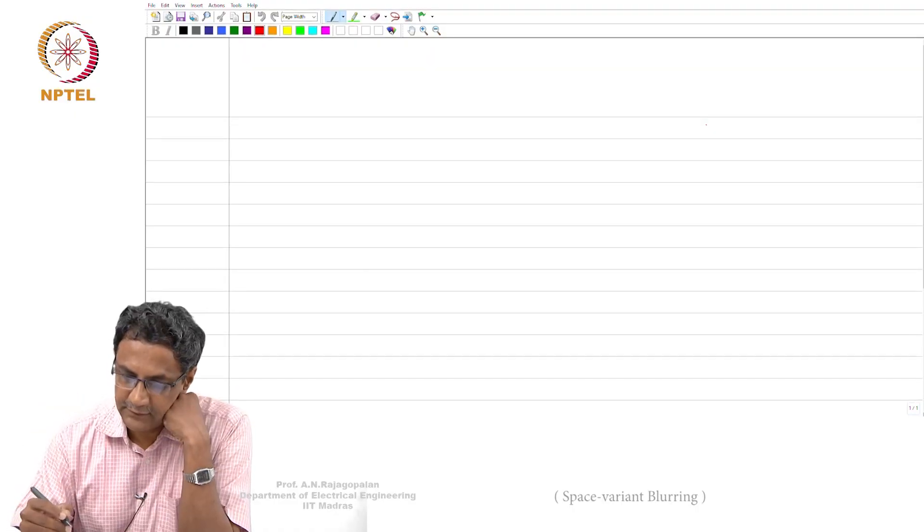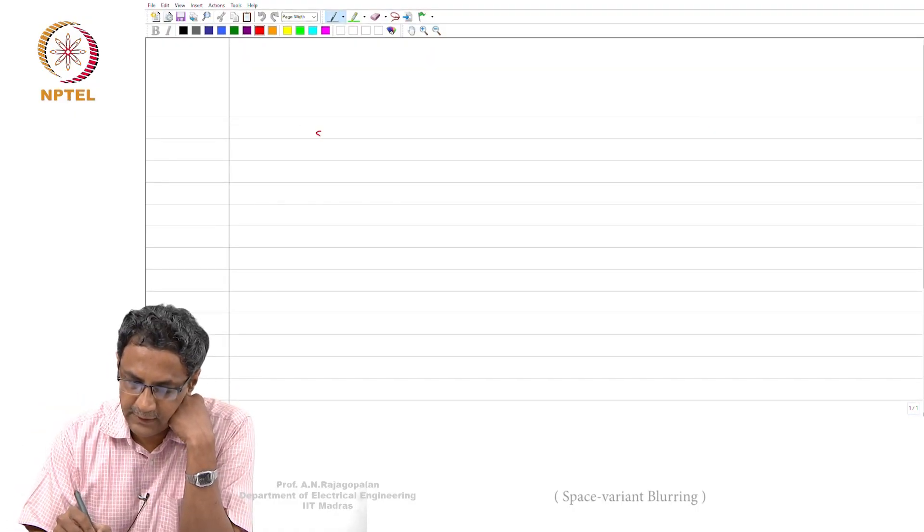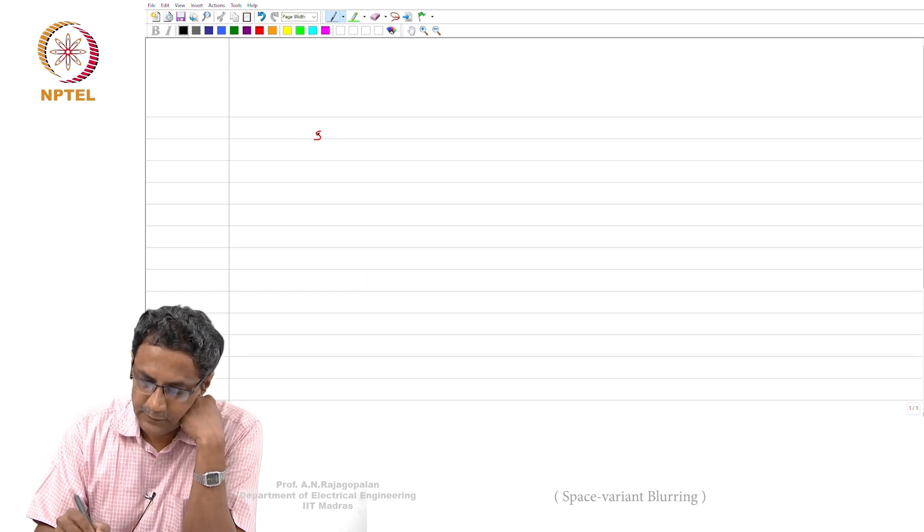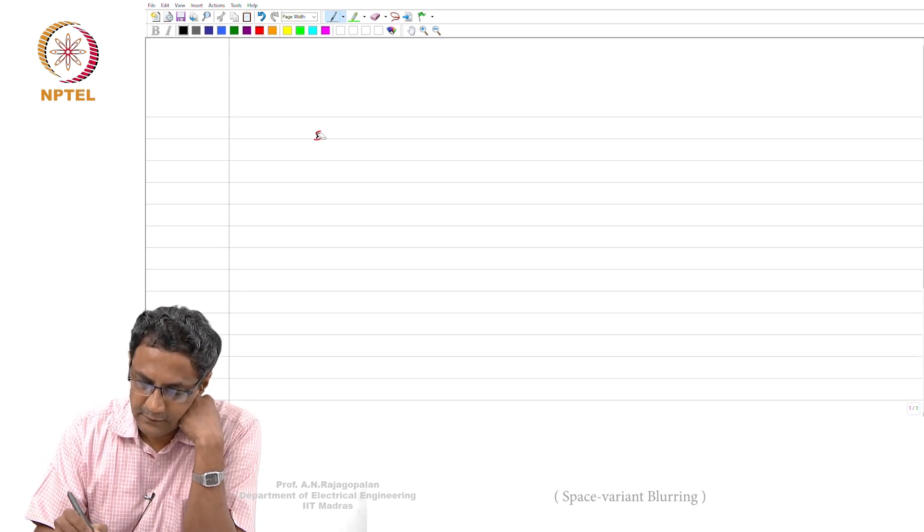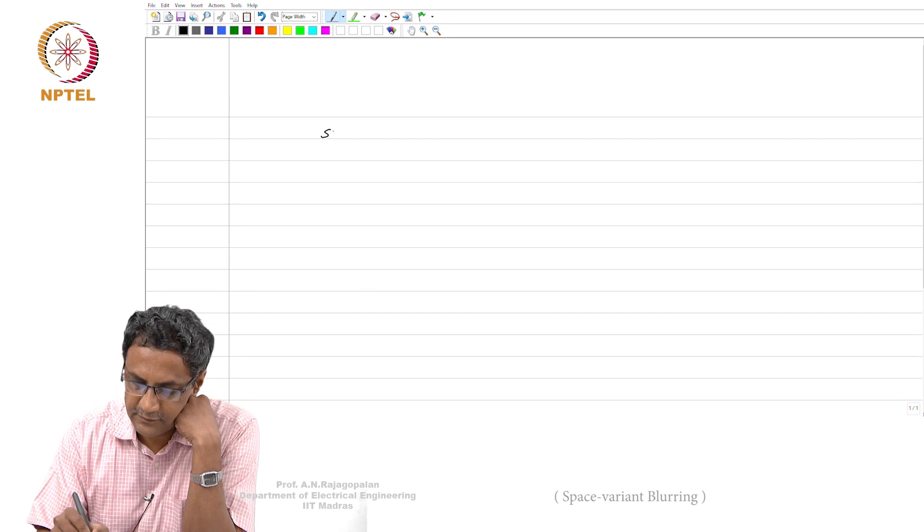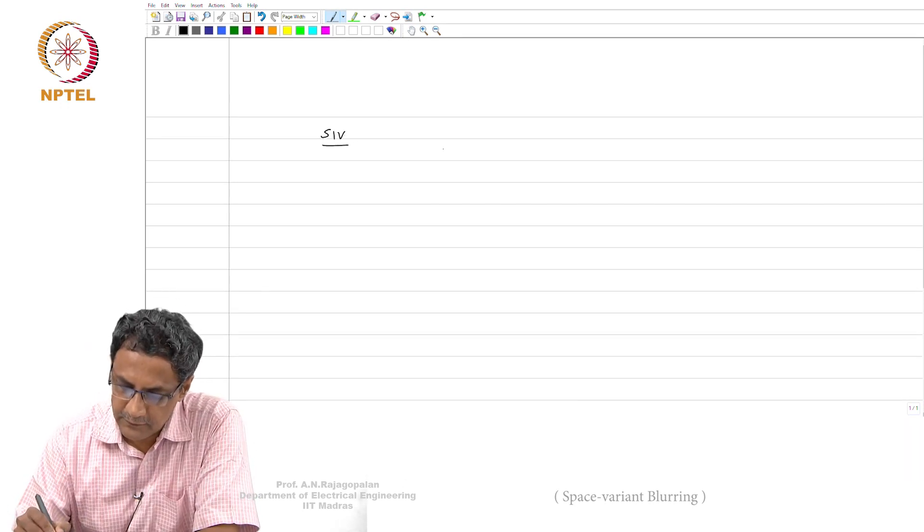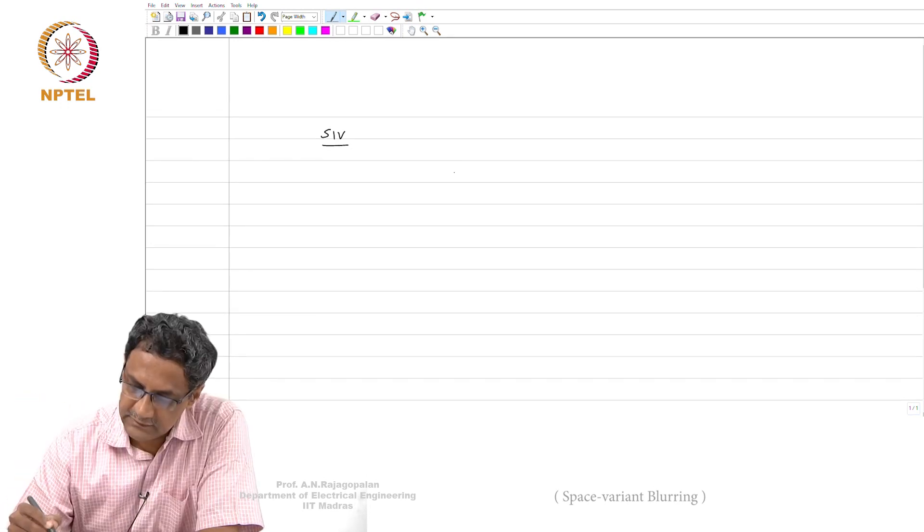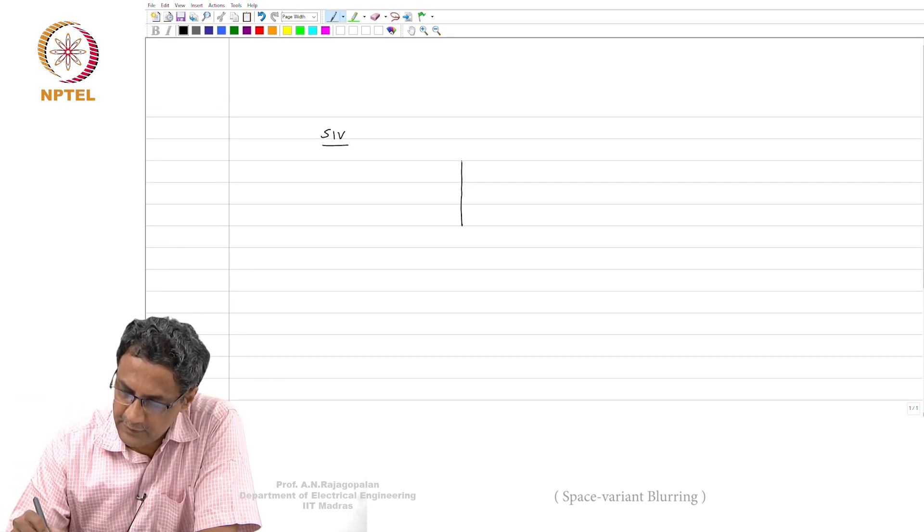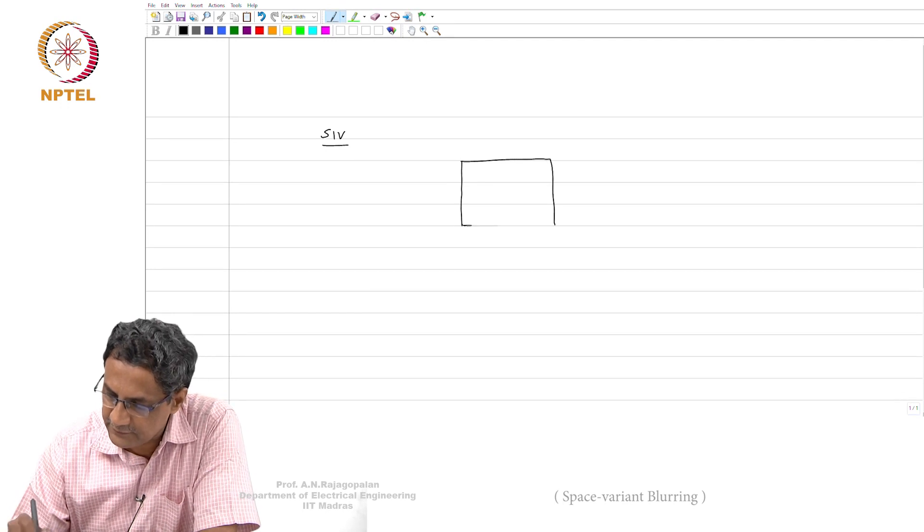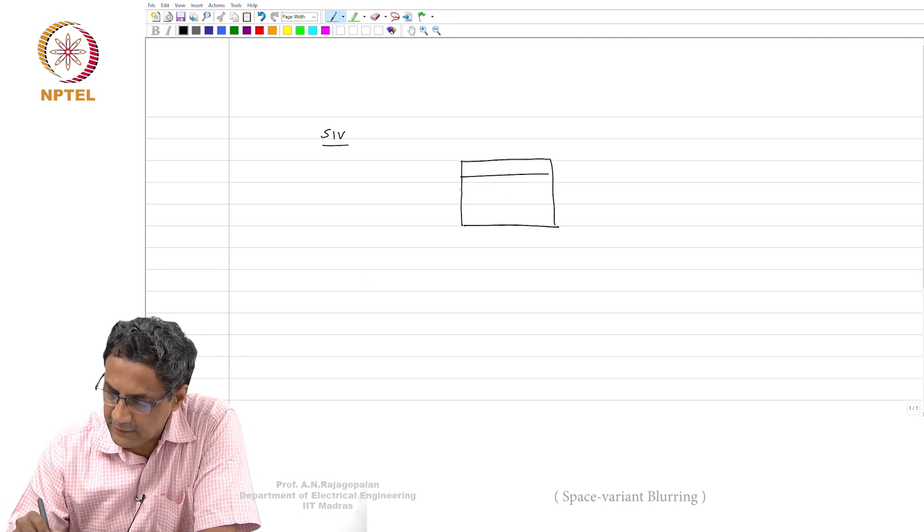So, we were - yesterday I was talking about this space invariant case, which is of course simple, right. It's like your normal kind of convolution except that at the boundary. I will just tell you what I meant. See you have something like this, right. This is your image.